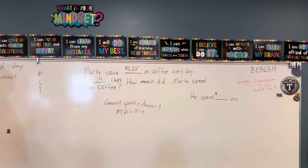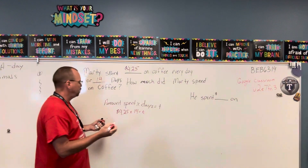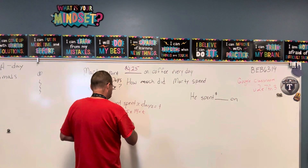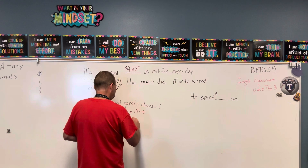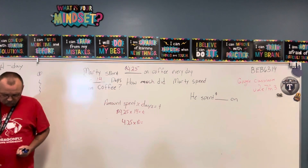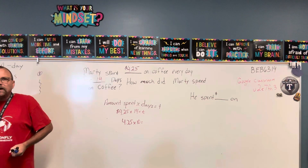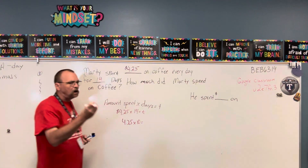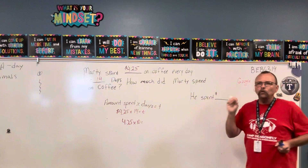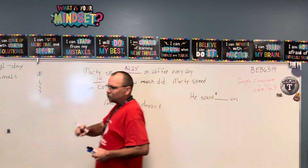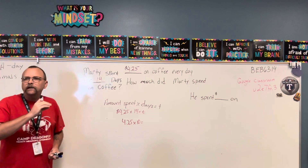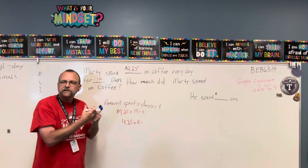Now, what I think is easy: I'm going to multiply four dollars and twenty-five cents times ten first. When I multiply something by ten, you've been taught you just put a zero behind it, but that's not exactly what you're doing. What you're actually doing is moving each place value so it's ten times bigger.